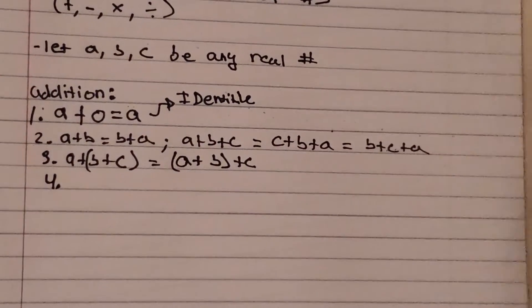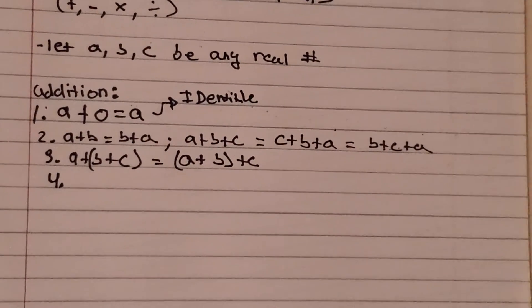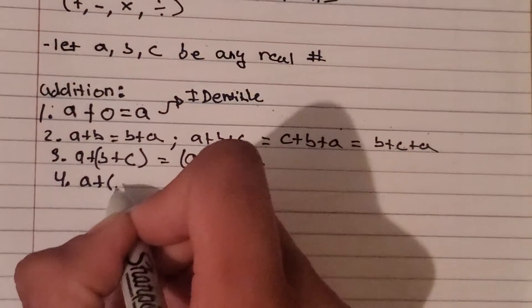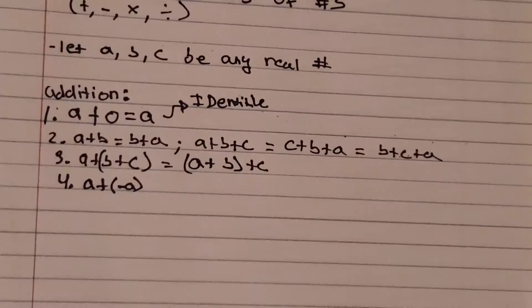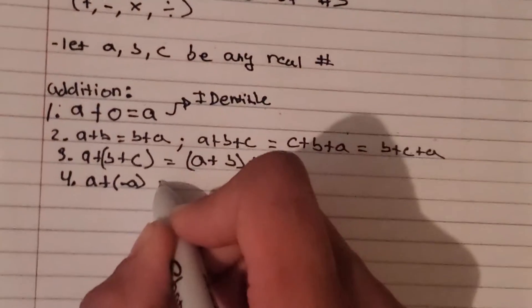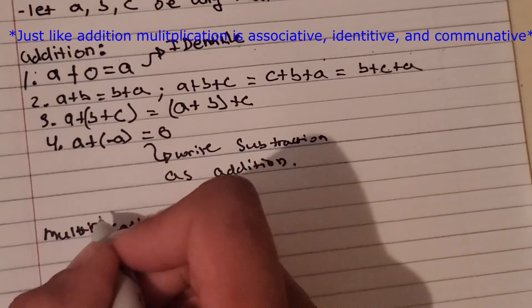We also have a property that says if we add a number and we add the opposite to it, it comes out to be zero.